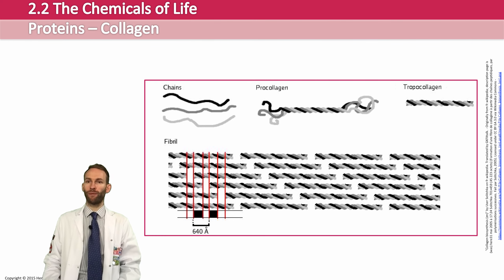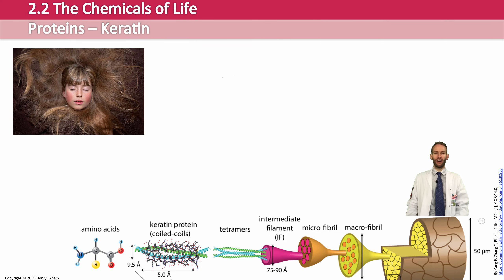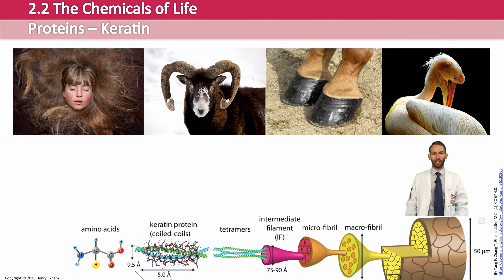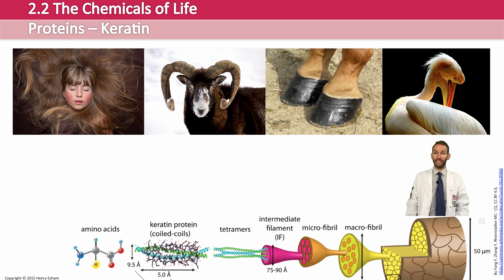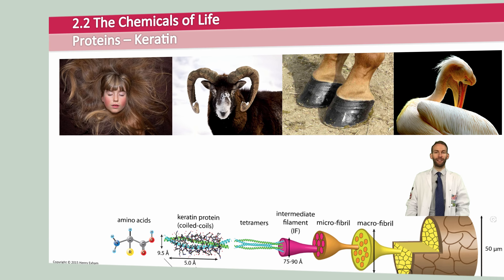Keratin is another example of a fibrous structural protein, similar to collagen. It forms the main structural components of hair, feathers on birds, hooves, claws, and horns, and is also found in our skin and nails. Again, it is made up of many long fibers and coils, and these are joined with disulfide bonds between cysteines, which gives it really high strength.